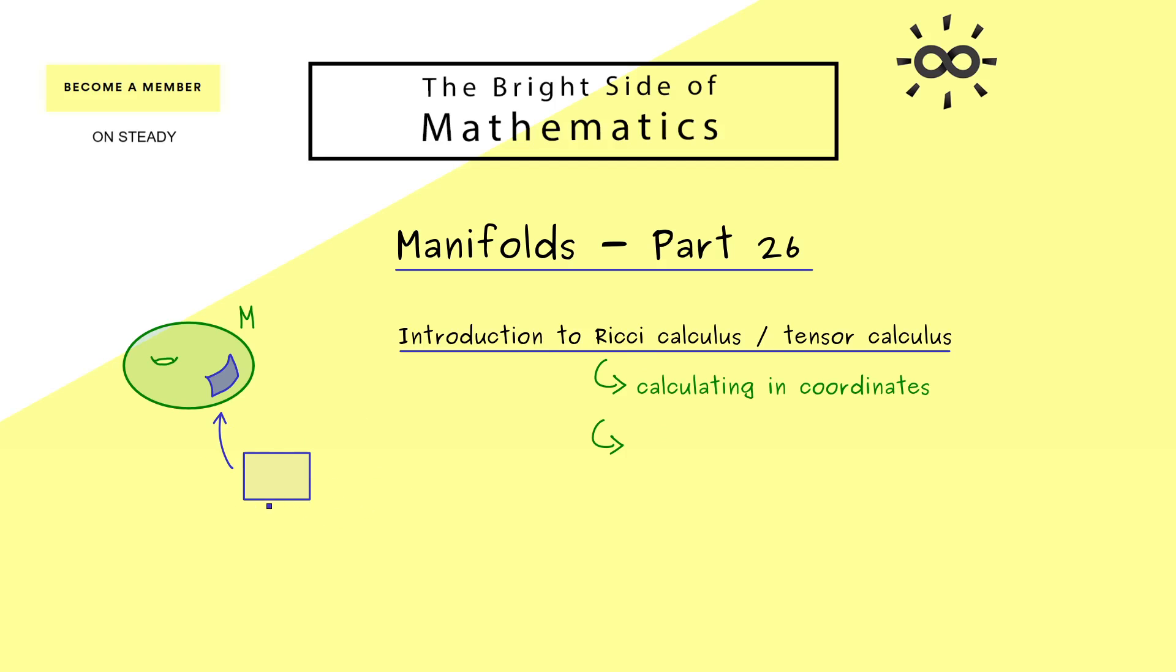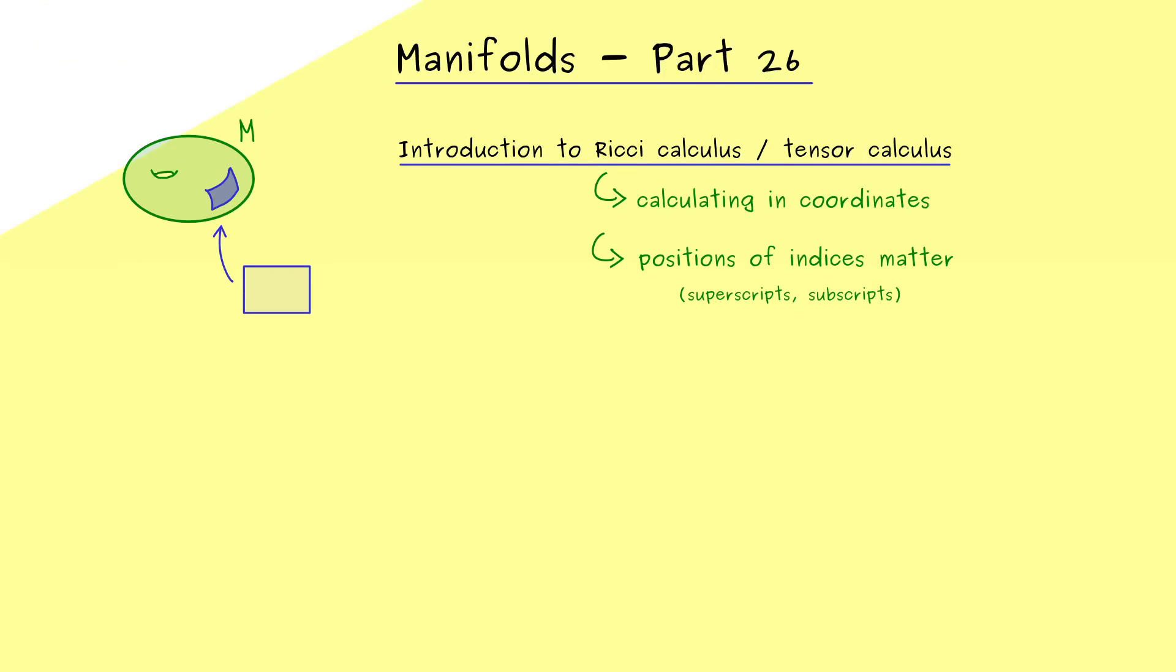In particular, you can use n indices to denote the n coordinates you have here. However, now the Ricci calculus does something funny, namely the positions of the different indices matter. Indeed, you have to deal with superscripts and subscripts. This means here we have a hidden meaning in the position of a given index. However, I would say, let's do that in more detail now. And we can do that by using a table.